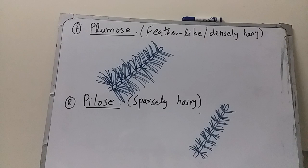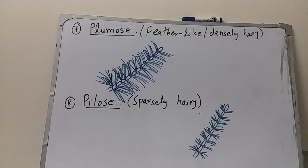From the diagram it is clear: plumose antennae have dense hairs at the junctions of segments and are found in male mosquitoes, while pilose antennae found in female mosquitoes have very small hairs. These two types of antennae are used to distinguish between male and female mosquitoes.